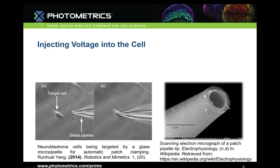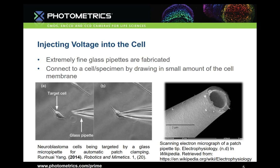When making potential recordings, targeting the specific cell is difficult since cells are closely together and the neighboring cell may not be the target. A way to measure individual cells must be utilized. Glass pipettes are heated and pulled to have an extremely fine tip that is capable of locking in on one cell to take the potential recordings.